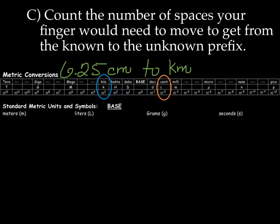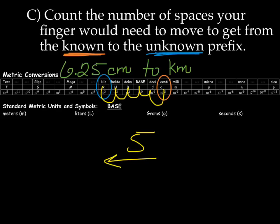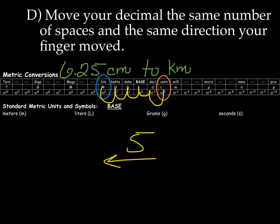And the third step is to count the number of spaces your finger would need to move to get from the known prefix, which was the orange one, to the unknown prefix. So we're going to start with the orange one, the centi. How many times do I need to move my finger? One, two, three, four, five. I had to move it five spaces. And which direction did I go? I went from right to left.